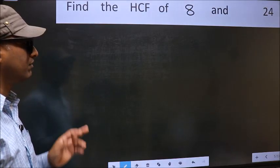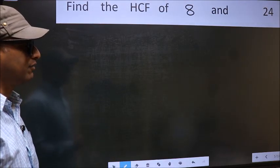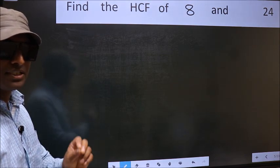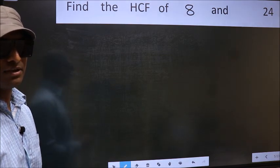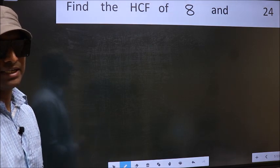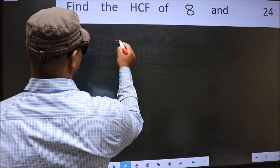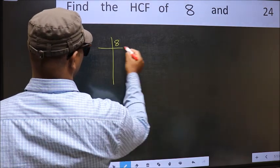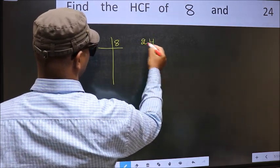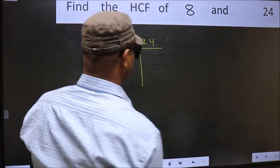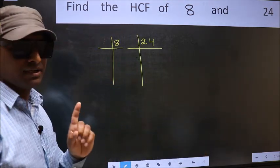Find the HCF of 8 and 24. To find the HCF, we should do the prime factorization of each number separately. What I mean is 8, 24. This is your step 1.